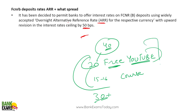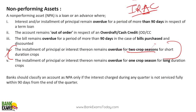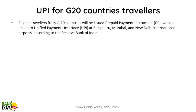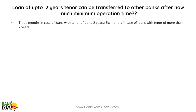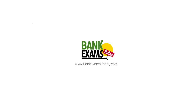You can verify by going through our old YouTube videos, old RBI Circular quizzes, and old news content — it's all available for free. UPI for G20 countries was in the exam too. Loans of up to two years' tenure can be transferred after six months of operation; if the tenure is more than two years, it's also six months.